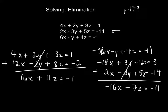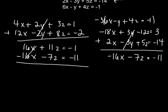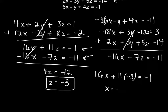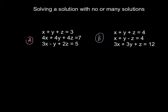Now we have two equations with x and z. We combine those, and the x's cancel out, giving us 4z equals negative 12, so z equals negative 3. Now that we know z, we can plug it into either equation to find x. We get 16x plus 11 times negative 3 equals negative 1, so x equals 2. Finally, we plug these into one of our original equations to get y. So z equals negative 3, x equals 2, and y equals 1.